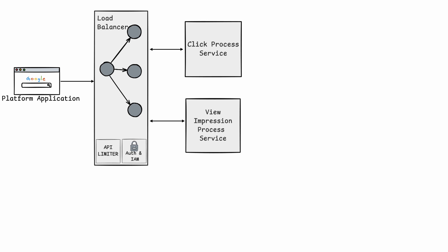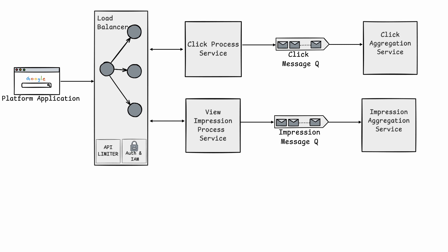We will start with a design that has a load balancer to distribute requests to services. We will have a click processing service for when click events happen, and a view impression processing service for when impression events happen. We can have client-side code to track impression events by monitoring user view time for ads. Then we add a message queue for each event to make the aggregation workflow asynchronous, decoupling event processing services from aggregation services so they can scale independently. The click processing service sends click events to the click message queue, which forwards them to the click aggregation service.